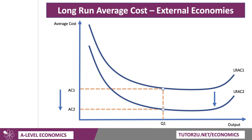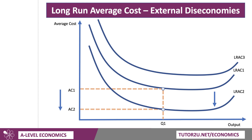Equally, there could be some external diseconomies of scale. What that causes is an upward shift in the LRAC, so at Q1 there are now higher unit costs. It could be that the industry overdevelops, becomes too congested — something happens and the industry grows too rapidly, leading to average costs going up for firms that are part of the industry.